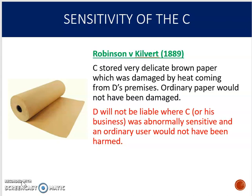The first factor to be considered is sensitivity of the claimant. In the case of Robinson v Kilvert, the claimant stored very delicate brown paper in his property which was damaged by heat coming from the defendant's premises. He sued in nuisance for this heat that had damaged his property. However, it was found that the paper was damaged because it was very sensitive — normal paper would not have been affected. The court held that a defendant won't be liable where the claimant or his business was abnormally sensitive and an ordinary user would not have been harmed.